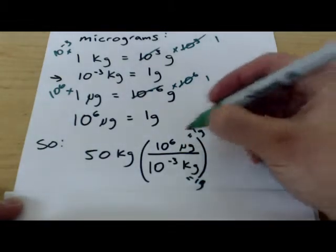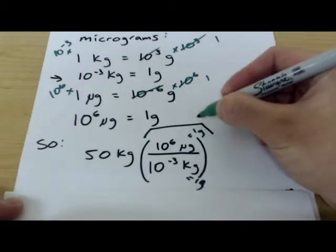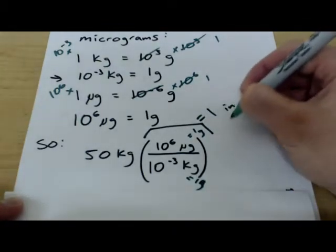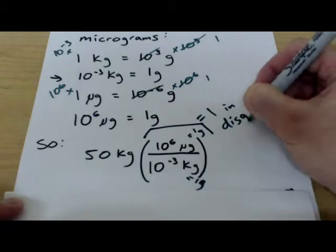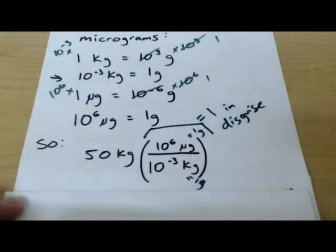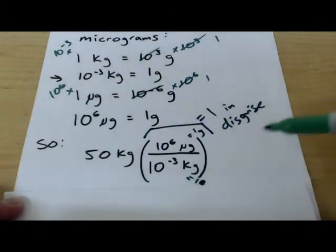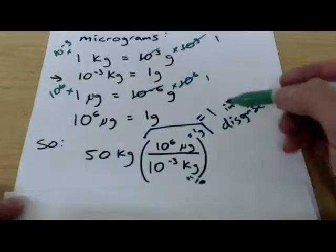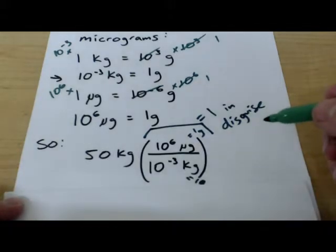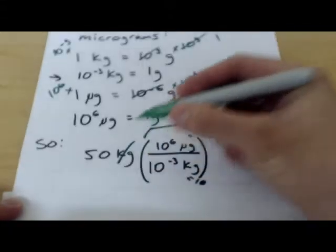We call this one in disguise. And we can use it to change the units of a number without changing the value. Because you can multiply any number by one and it has the same value. So the kilograms cancel out. Kilogram divided by kilogram is nothing. Or one, I guess.